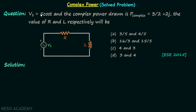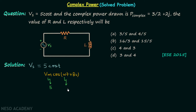We have voltage source Vs providing the voltage 5cosT. When we compare this with the standard equation Vm·cos(ωT + θV), we find Vm is equal to 5, ω (the angular frequency) is equal to 1, and θV (the phase angle) is equal to 0.